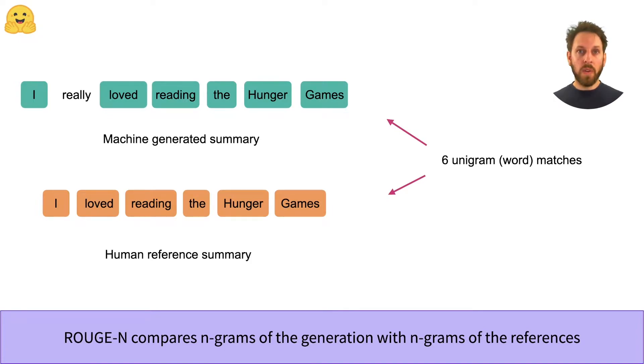In this example, you can see that six of the words in the generated summary are also found in one of the reference summaries. And the ROUGE metric that compares unigrams is called ROUGE-1.